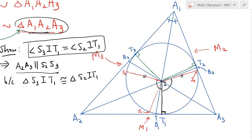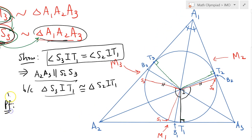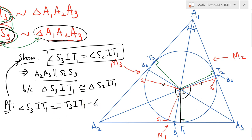So how do I chase these angles? I can express angle S3 I T1 as angle T3 I T1 minus angle T3 I S3. Let me move things aside and write the proof. Angle S3 I T1 equals angle T3 I T1 minus angle T3 I S3. I should be able to express everything in terms of the angles A1, A2, A3.